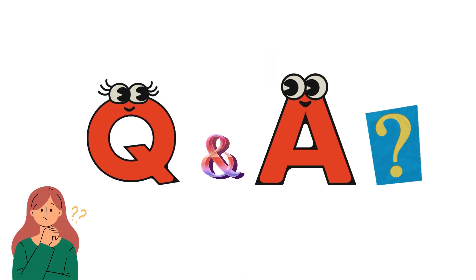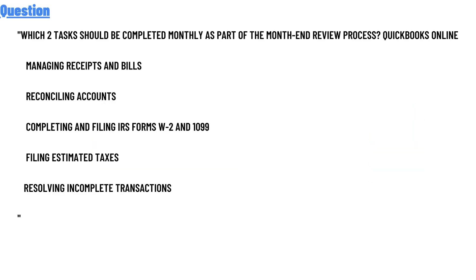Our today's question is: which two tasks should be completed monthly as parts of the month-end review process in QuickBooks Online? The options are: managing receipts and bills, recording selling accounts, completing and filing IRS forms W2 and 1099, filling estimated taxes, and resolving incomplete transactions.